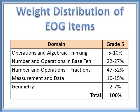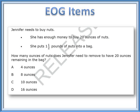My biggest suggestion for this measurement section is that it's a great time to embed place value, operating on numbers, and fraction concepts. Looking at the released EOG test, that's exactly what DPI did in those released items. For example, the only measurement conversion item on the fifth grade released EOG asks: Jennifer needs to buy nuts and has enough money to buy 20 ounces. She puts one and a half pounds of nuts into a bag — how many ounces does she need to remove? So you're working with fractions but also with conversions.